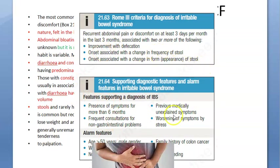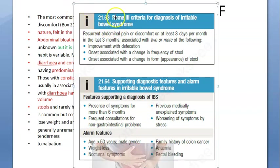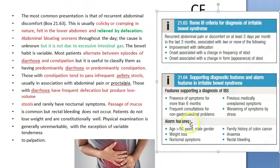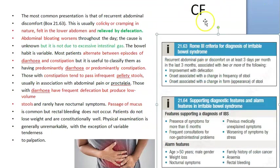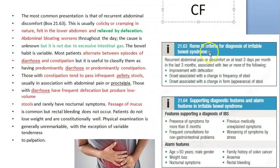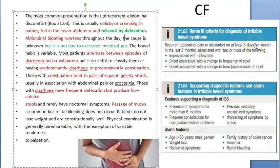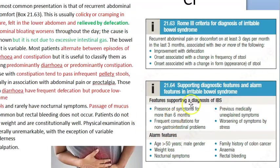Additionally, under Rome 3, there should be a change in the frequency of stool and the form of the stool — not just pain that goes away after defecation, but the actual stool frequency and form has changed. The onset of symptoms should also have been present for more than six months.